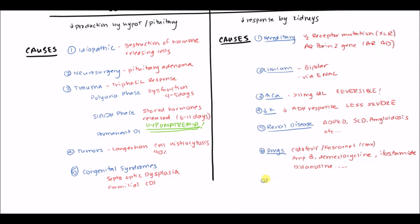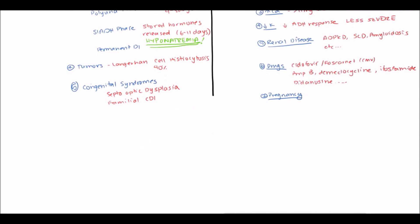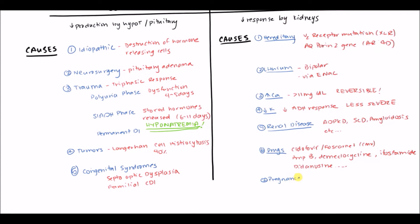Finally, pregnancy can be a cause of nephrogenic diabetes insipidus. Many pregnant women experience polyuria, and one reason is that during pregnancy there is a decreased response to ADH by the kidneys. That covers the discussion of causes.